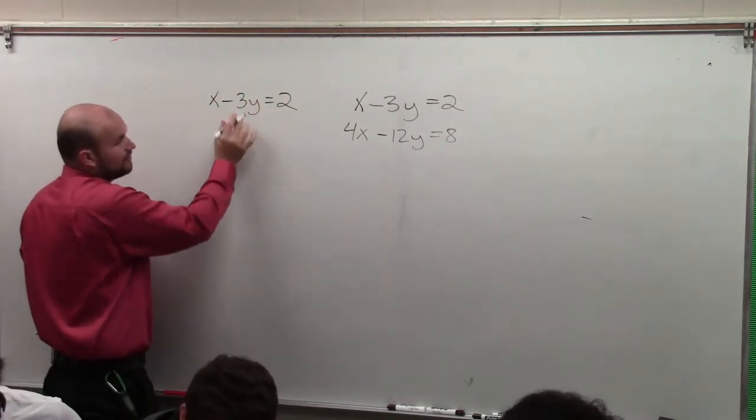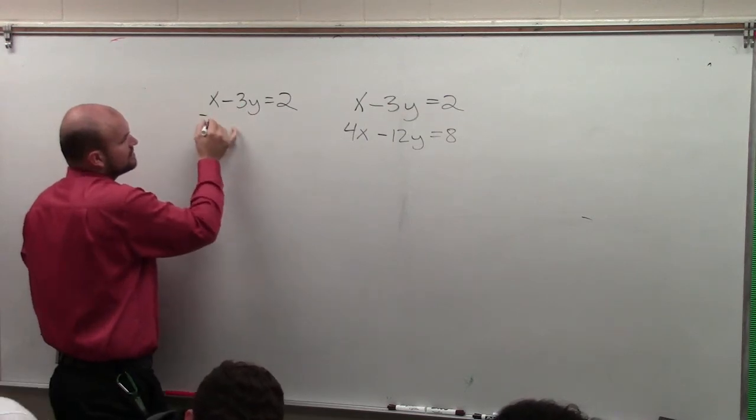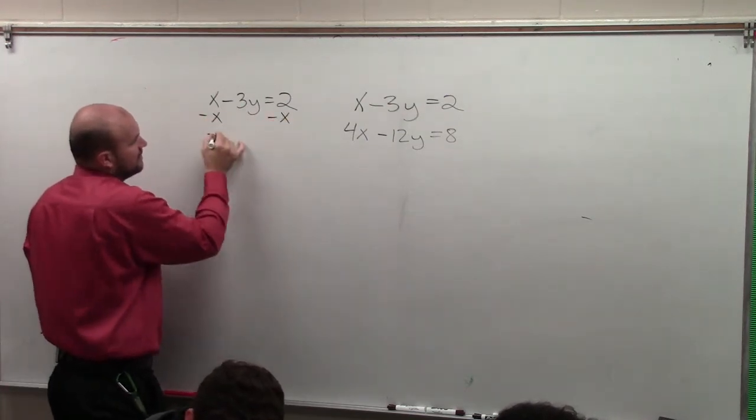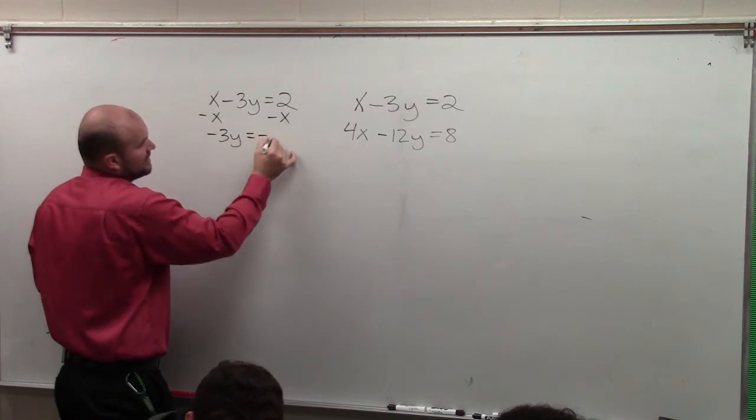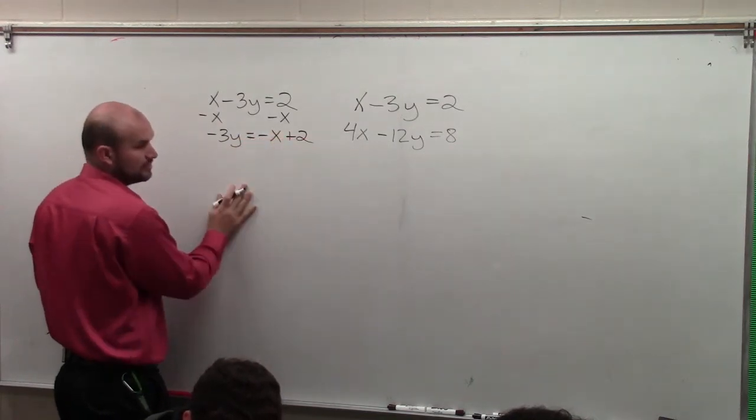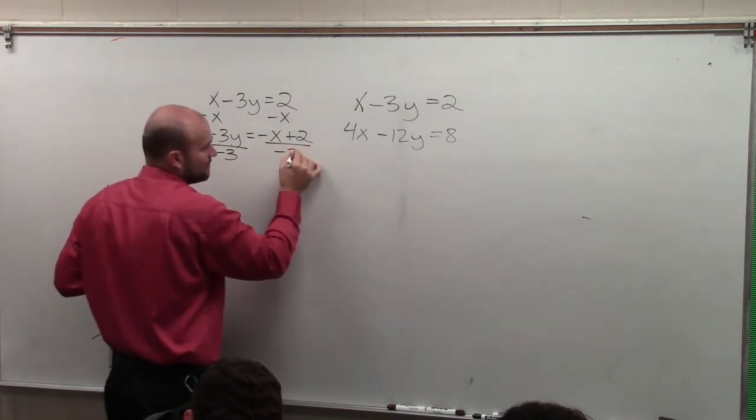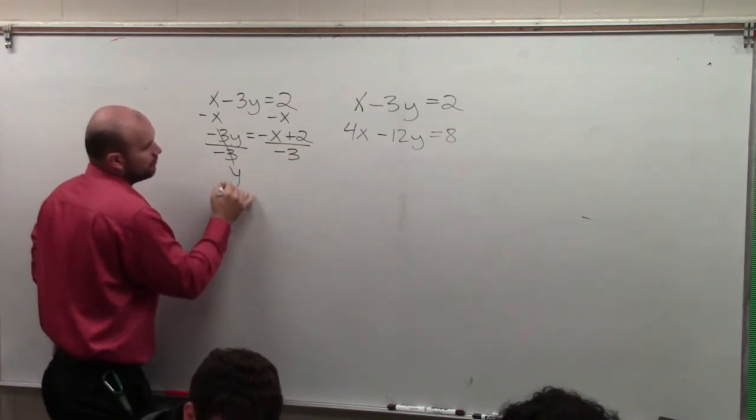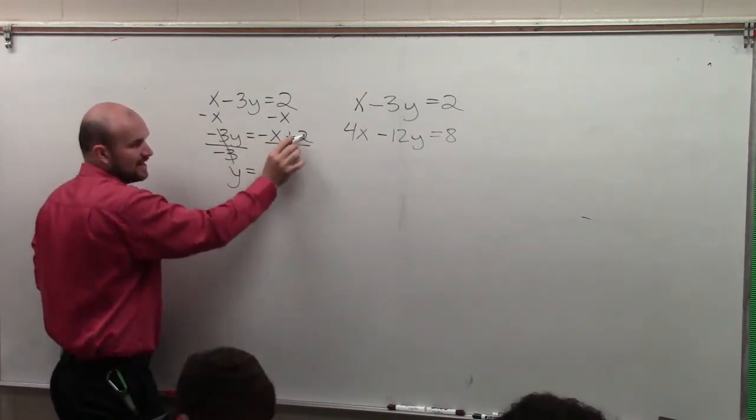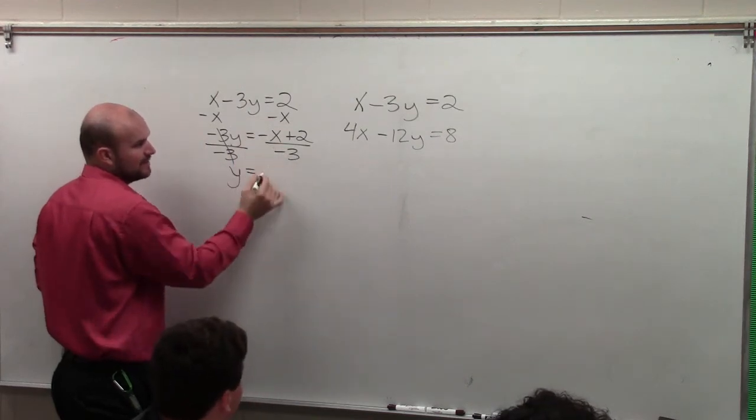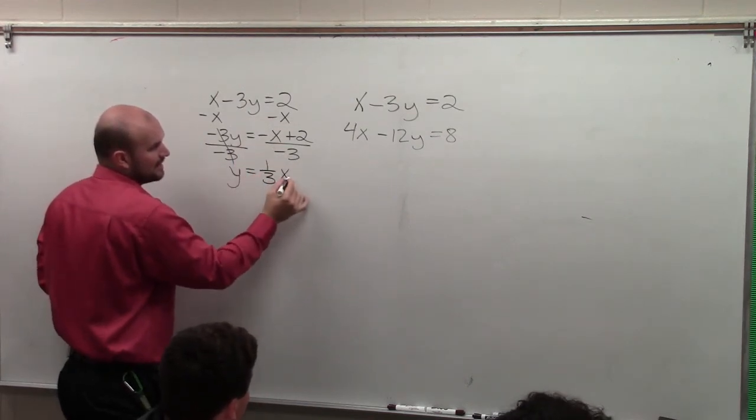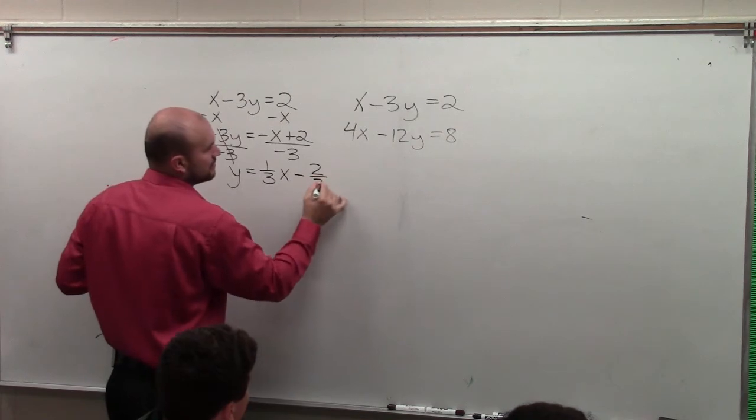So to do that, I need to solve for y. So the first thing I'm going to do is subtract an x on both sides. Then I have negative 3y equals negative x plus 2. Now, to solve for y, I divide by negative 3. And then I have y equals - remember, you divide the negative 3 into both of these terms - negative divided by negative is a positive 1 third x minus 2 thirds.